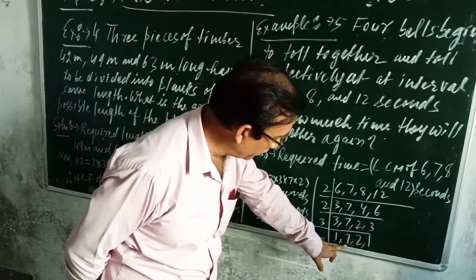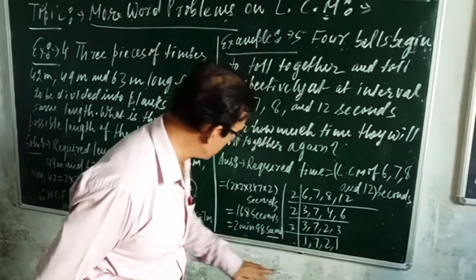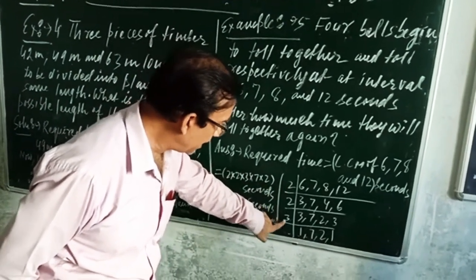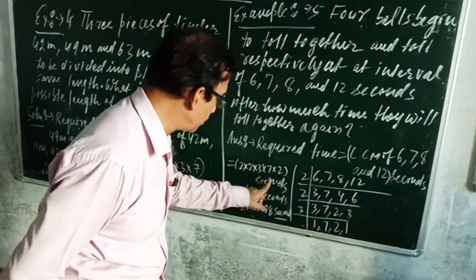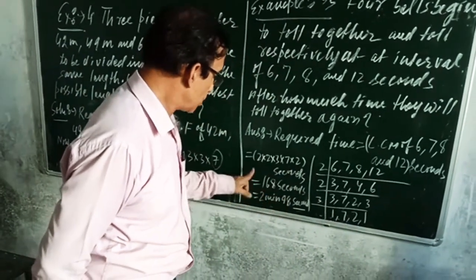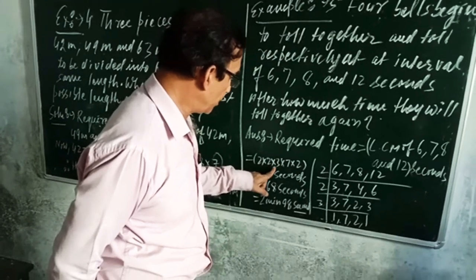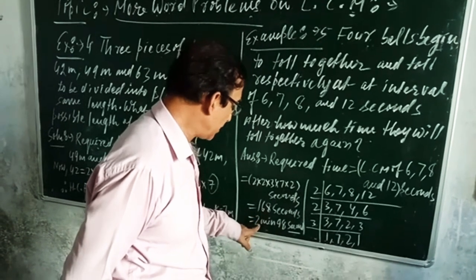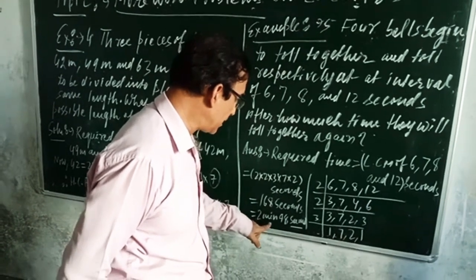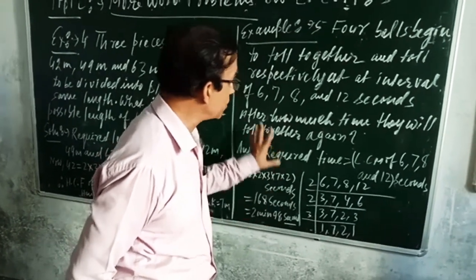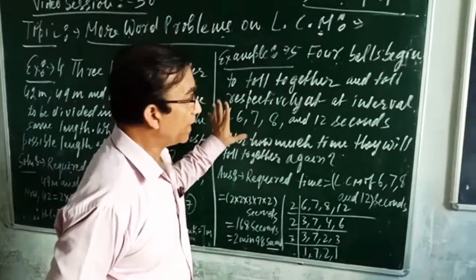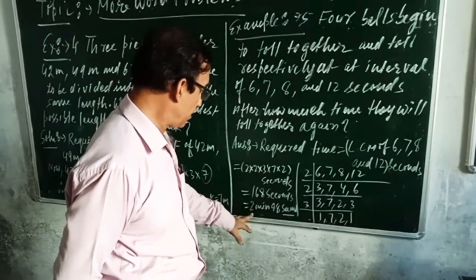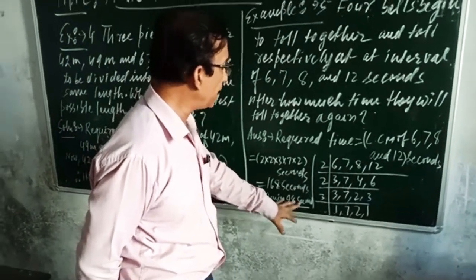Our remainder will be 1, 7, 2 and 1. Continuing the division method by 2, by 2, by 3, we get the LCM. That is to say all the 4 belts will ring together collectively at the calculated interval.